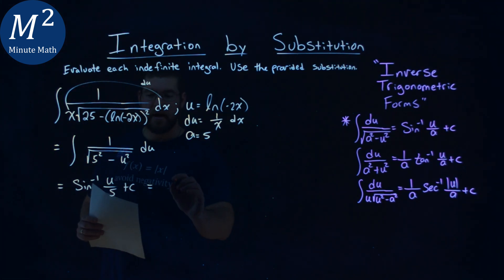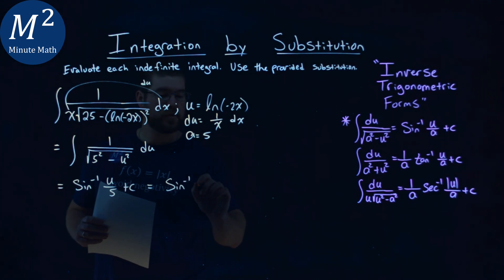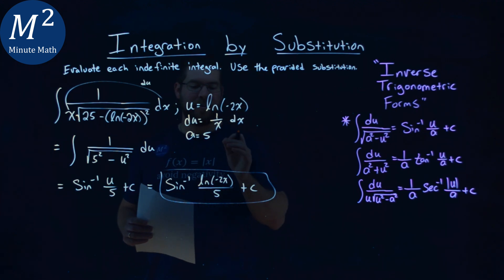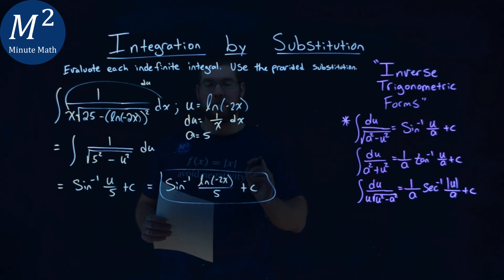Simplifying that out here, we have, now we're going to put u in terms of x, coming in here, arc sine of the natural log of negative 2x, over 5, plus c, and there we have it. My final answer is the arc sine of the natural log of negative 2x over 5, plus c.